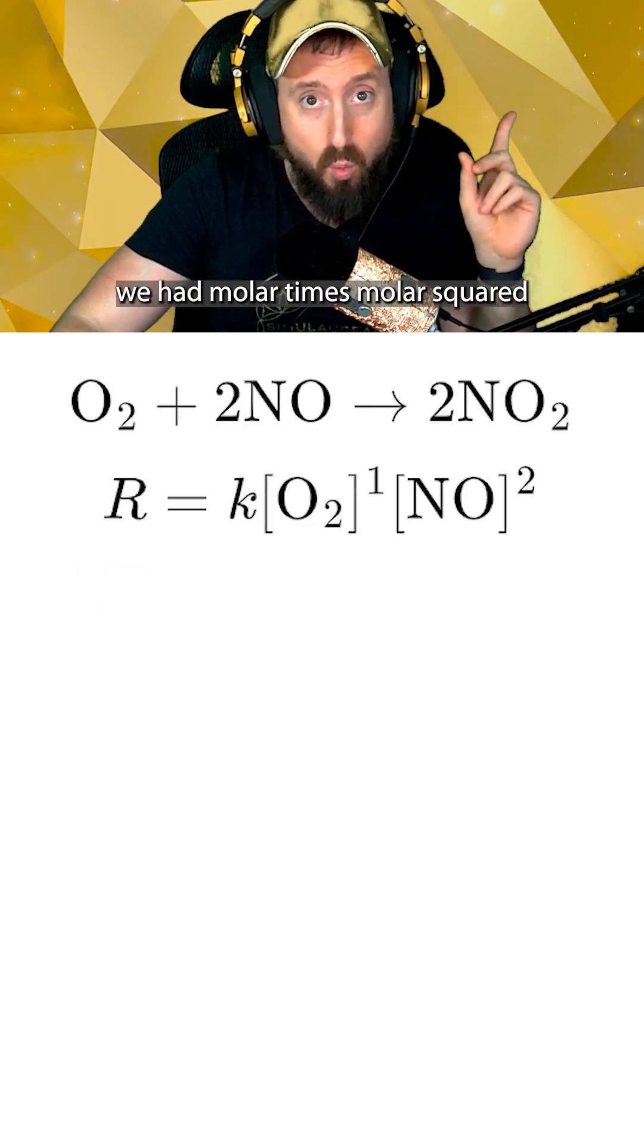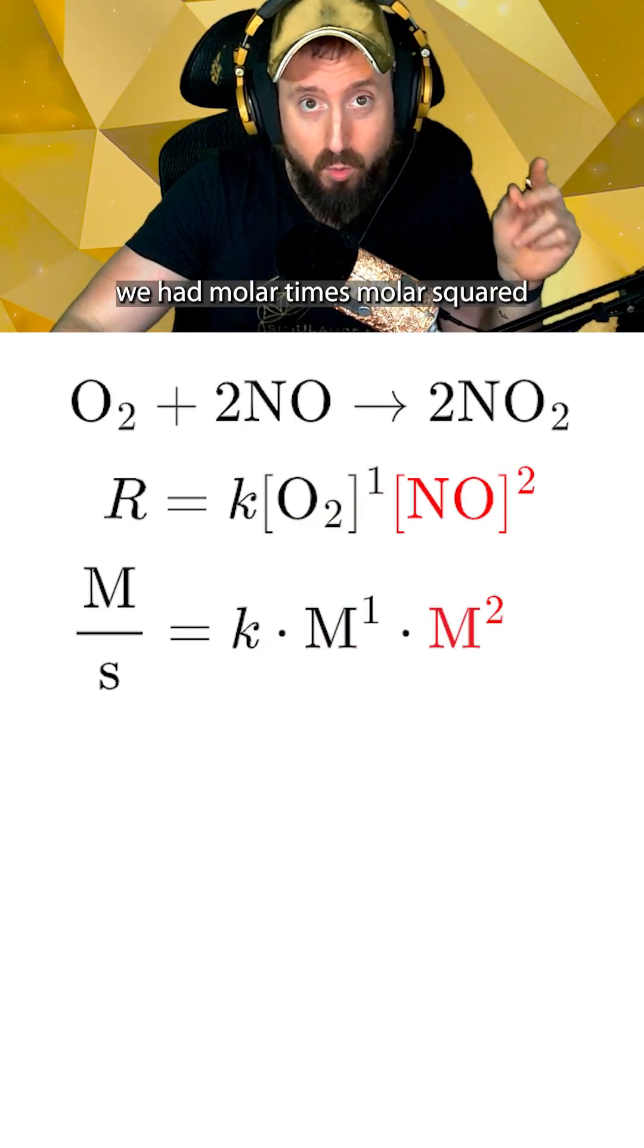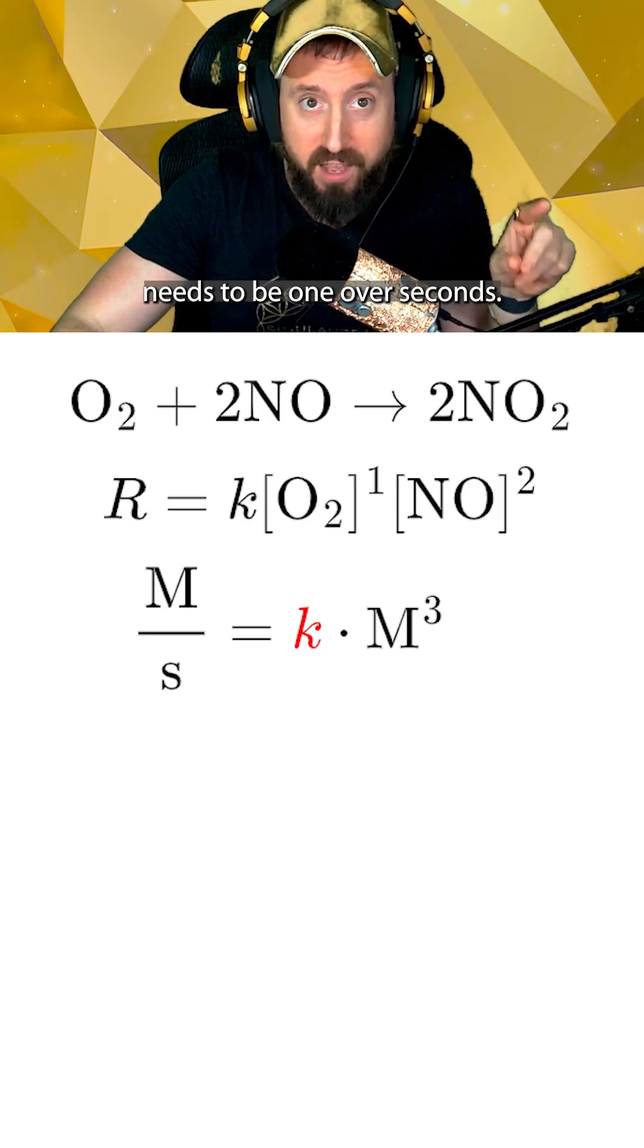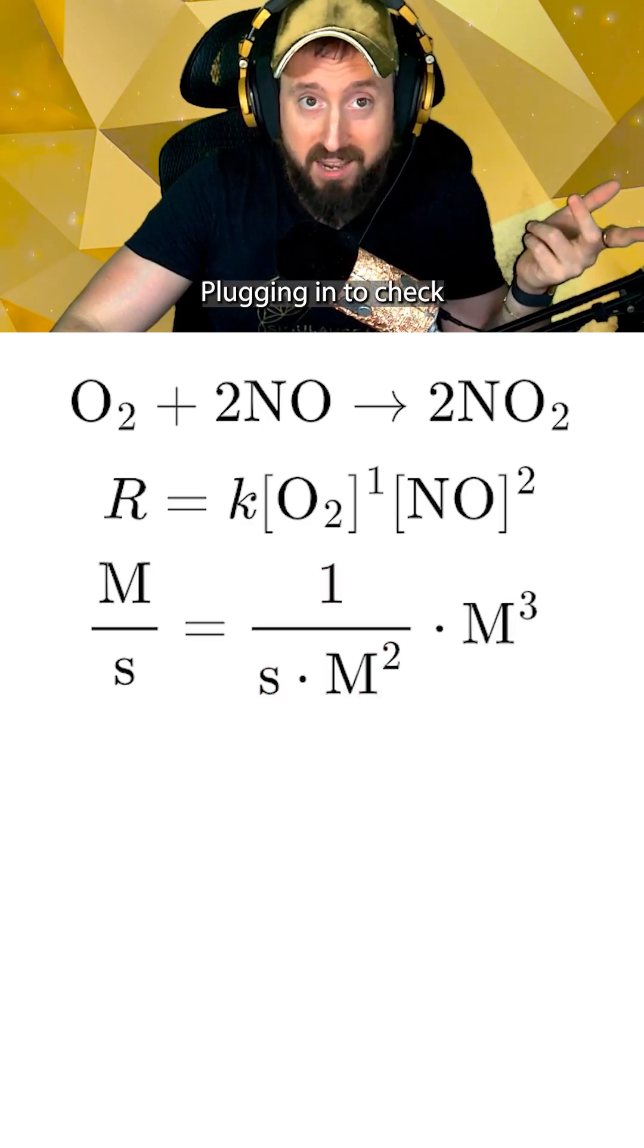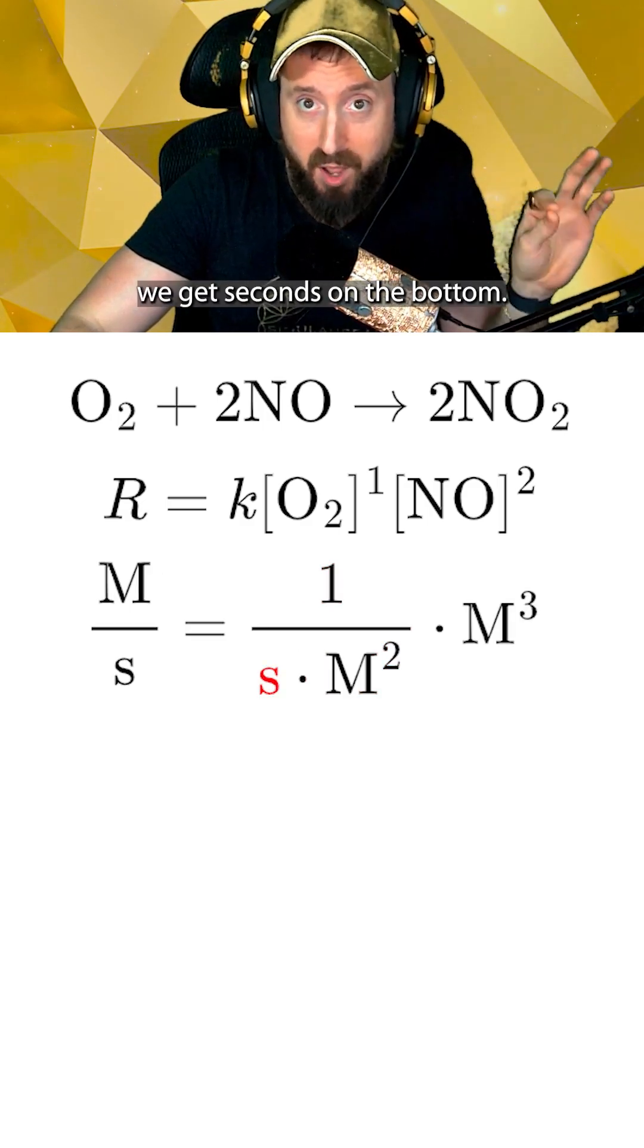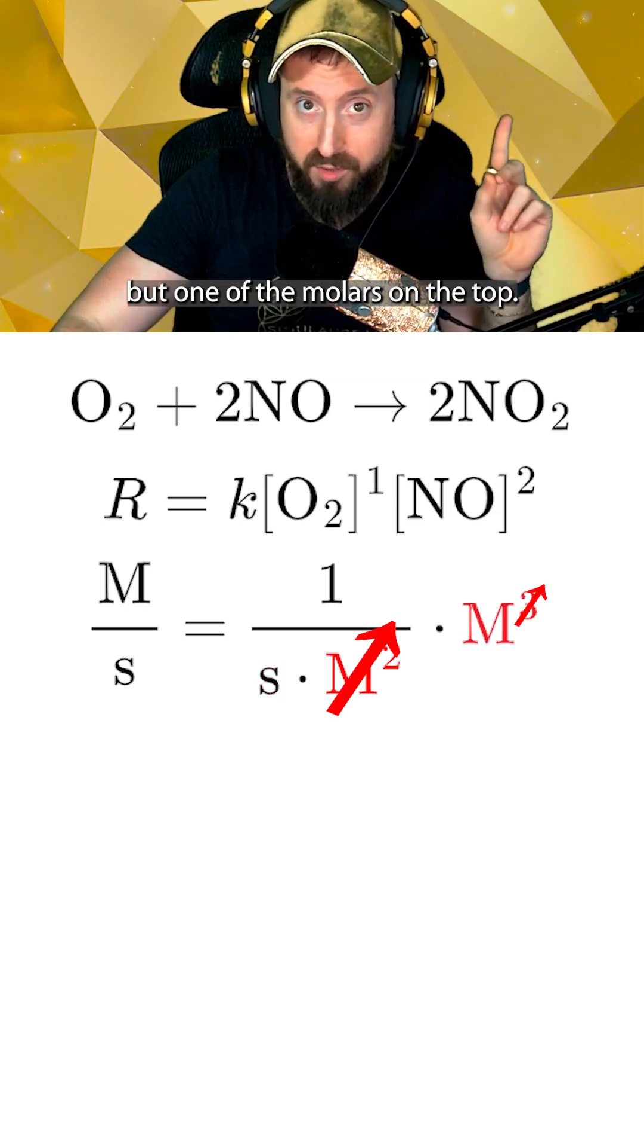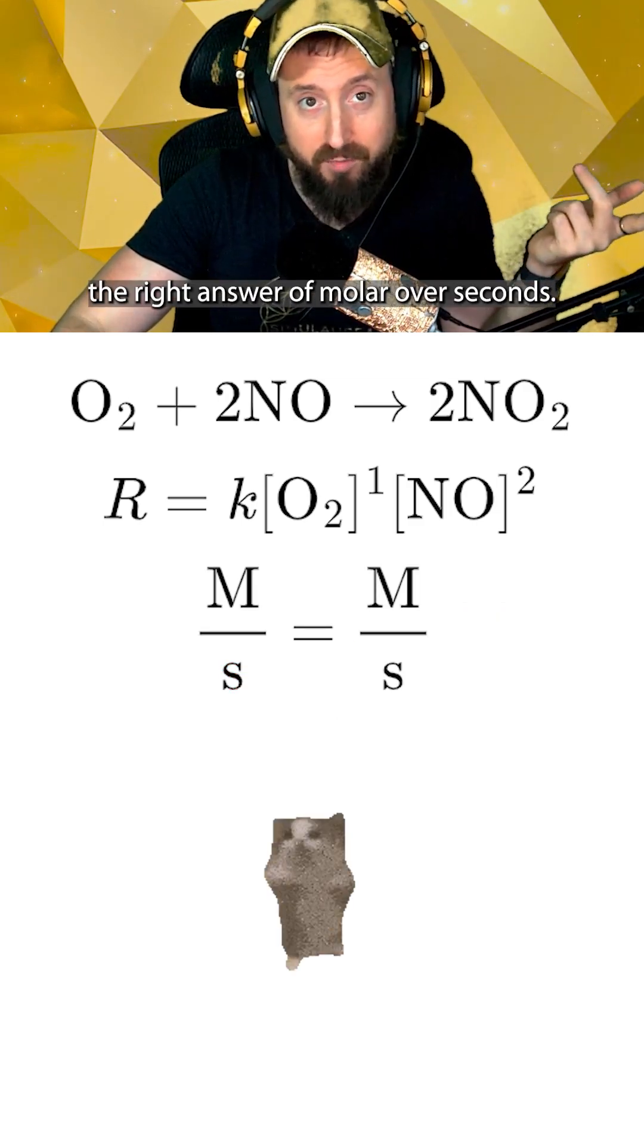In this example, we had molar times molar squared, which gave us molar to the third. So now this means K needs to be one over seconds molarity squared. Plugging in to check, we get seconds on the bottom, and then the molar squared cancels out all but one of the molars on the top. This gets you the right answer of molar over seconds.